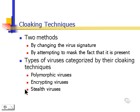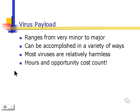The potential damage from a virus is called payload. A virus payload ranges from very minor to major, and it can be accomplished in a variety of ways. Most viruses are relatively harmless — there are over 48,000 viruses at the date of this recording, but most are harmless.